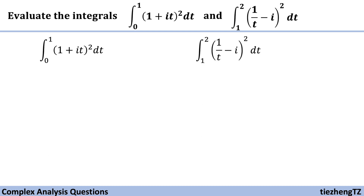Now let's take a look at the first one: the integral from zero to one of (1 + it)² dt. First, we need to open the square, so the equation is equal to the integral from zero to one of (1 - t²), because i² is minus one, and then plus two times i times t.